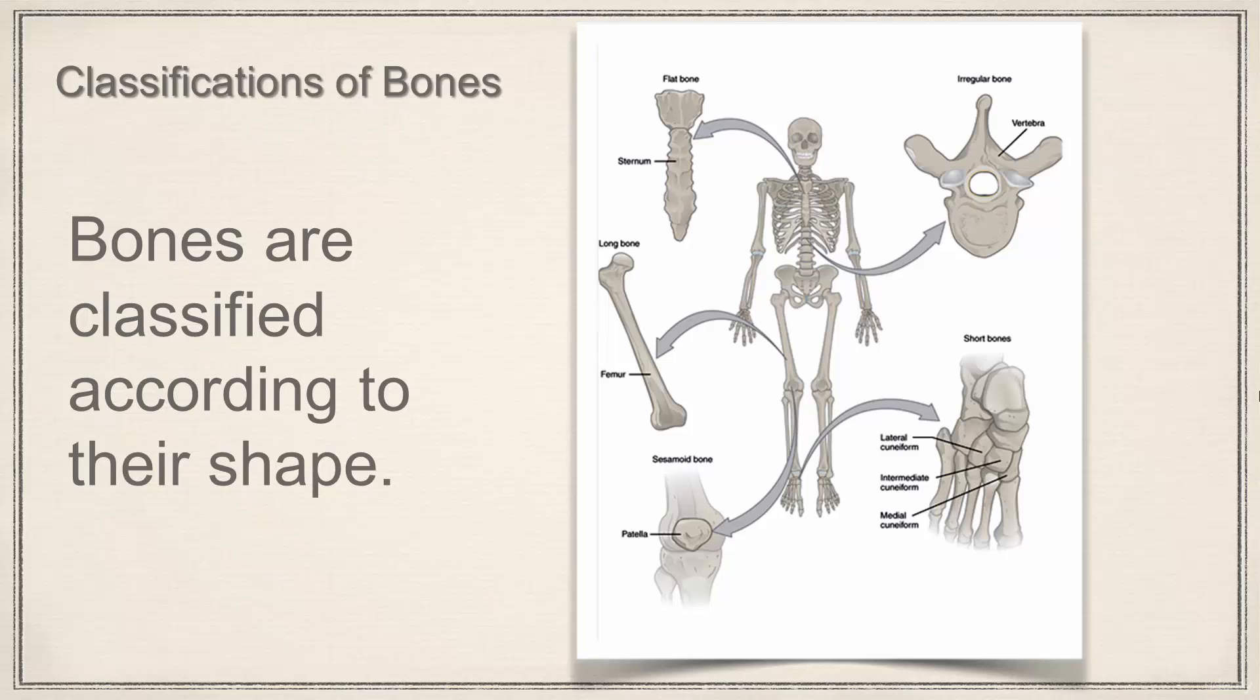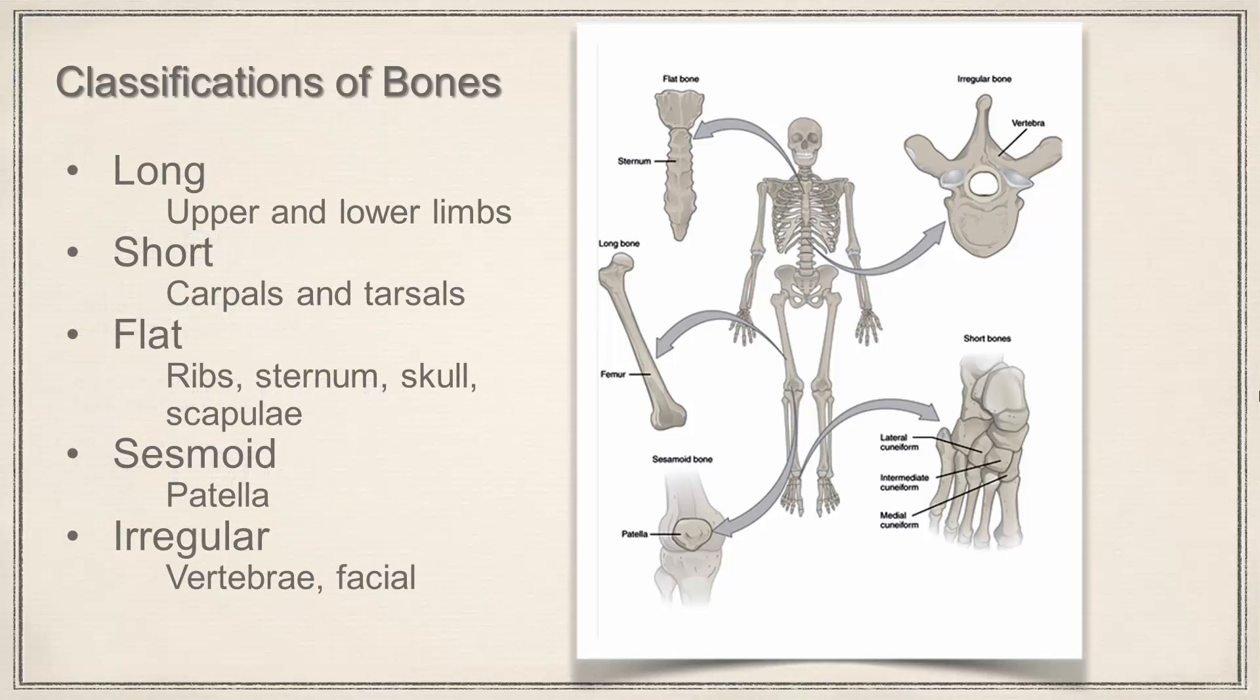Now we can classify bones according to their shape, and we have long bones, short bones, flat bones, sesamoid bones, and irregular bones. So let's take a look at long bones. Long bones we're going to find in the upper and lower extremities.